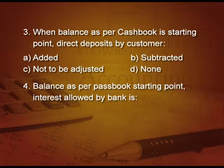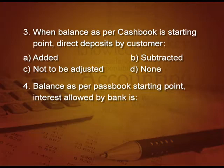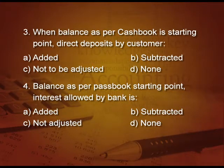Similarly, the next one: balance as per pass book is the starting point, then interest allowed by bank — meaning given to the customer — will be added, subtracted, not adjusted, or none of these? It will be subtracted because in pass book it is already added, so now we have to subtract it.